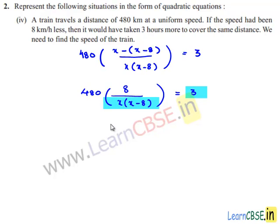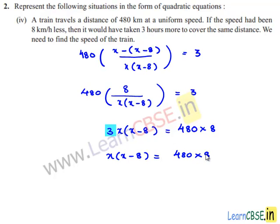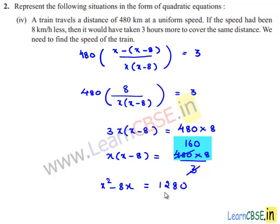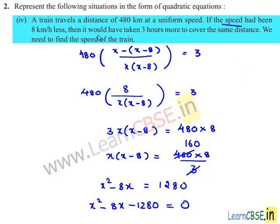On cross multiplication, we get 3 times x times (x minus 8) equals 480 times 8, which is 3840. Dividing: x squared minus 8x equals 3840 divided by 3, which equals 1280. Transposing 1280 to the left-hand side: x squared minus 8x minus 1280 equals 0. Therefore, the given condition can be expressed as the quadratic equation x squared minus 8x minus 1280 equals 0.